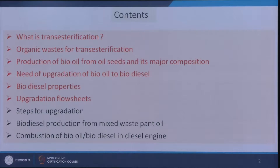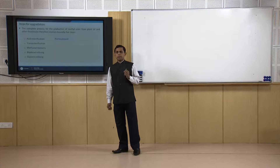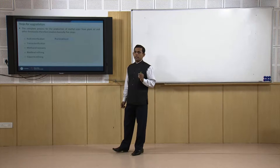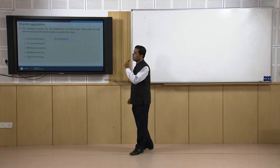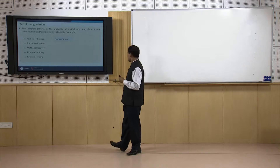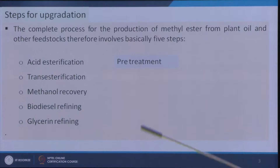In the first part of this module we discussed the general flow sheet for the upgradation of bio-oil and other waste containing triglycerides. We saw that there are five basic steps involved in the whole process: the first step is acid esterification, the second is transesterification, the third is methanol recovery, the fourth is biodiesel refining, and the fifth is glycerin refining.